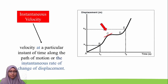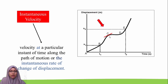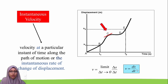Instantaneous velocity means the velocity at a particular instant of time along the path of motion, or the instantaneous rate of change of displacement. Referring to the displacement-against-time graph, we focus at point C, draw a tangent line at that point, and the slope of this tangent is called instantaneous velocity, with gradient ds over dt.